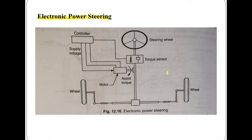Let's discuss what units are used in the electronic power steering system. There is a steering wheel with the shaft connected to a torque sensor. One system of a controller is there. The supply voltage is shown and that is interlinked with the assist that is connected with the motor. So let's discuss about the electronic power steering system.